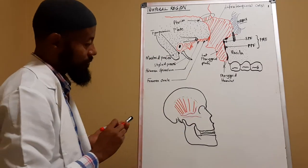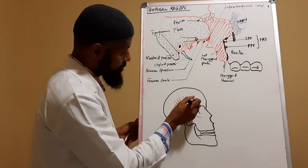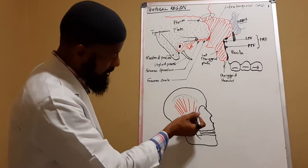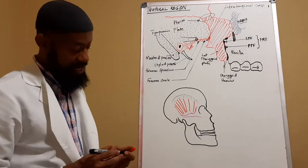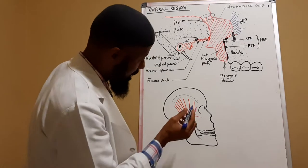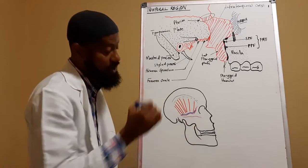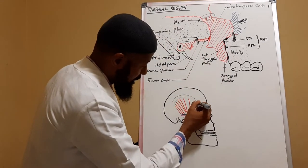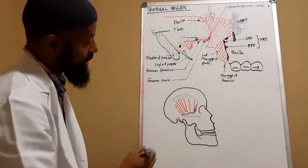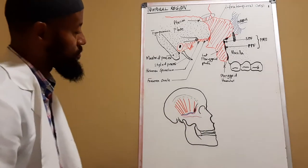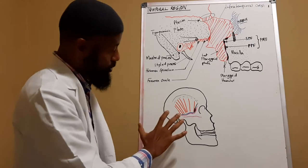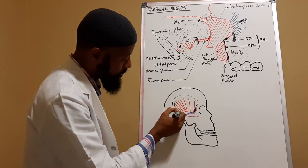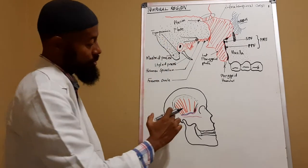The temporal region has boundaries. The superior boundary is formed by the temporal lines — we have a superior and inferior temporal line. The inferior boundary is the superior margin of the zygomatic arch. The anterior boundary is the frontal bone as well as the maxillary process of the zygomatic bone. The posterior boundary is a continuation of the superior and inferior temporal lines.